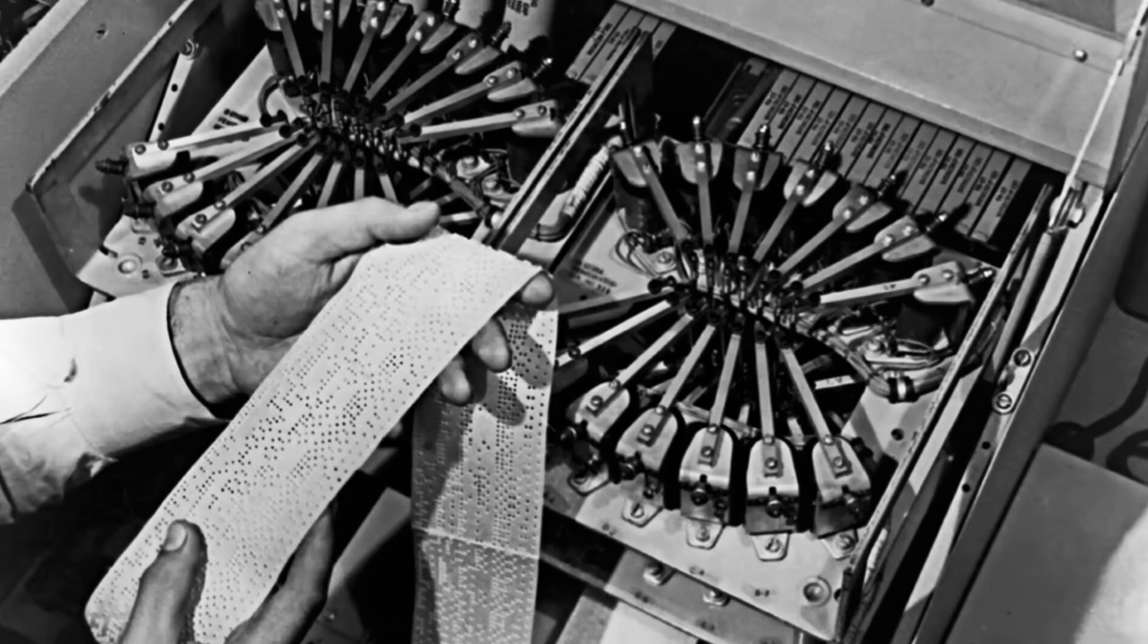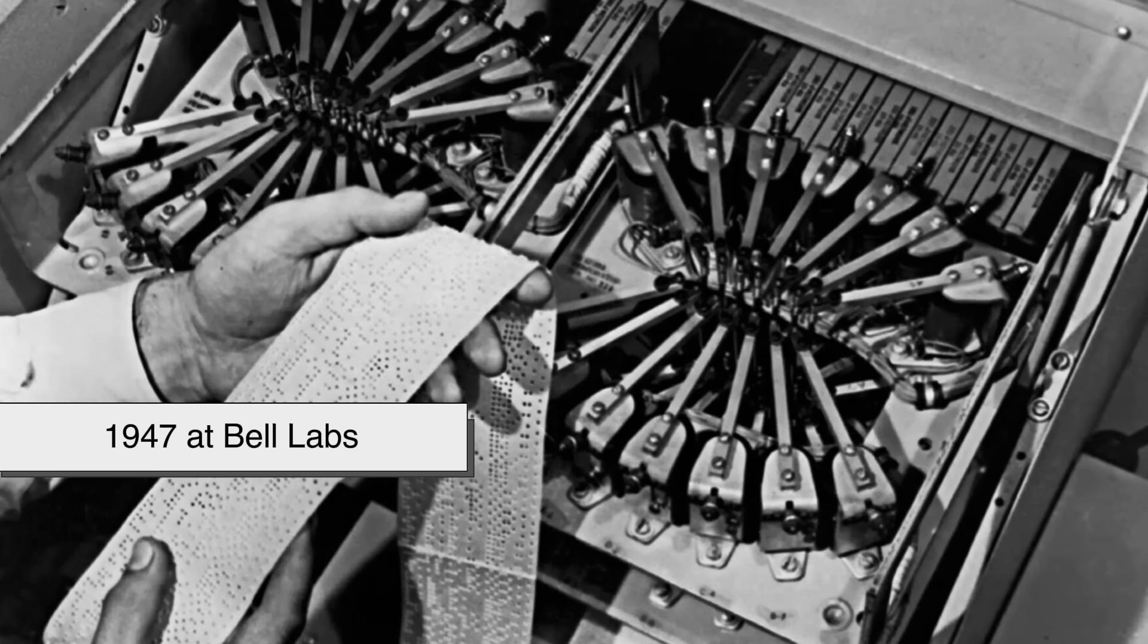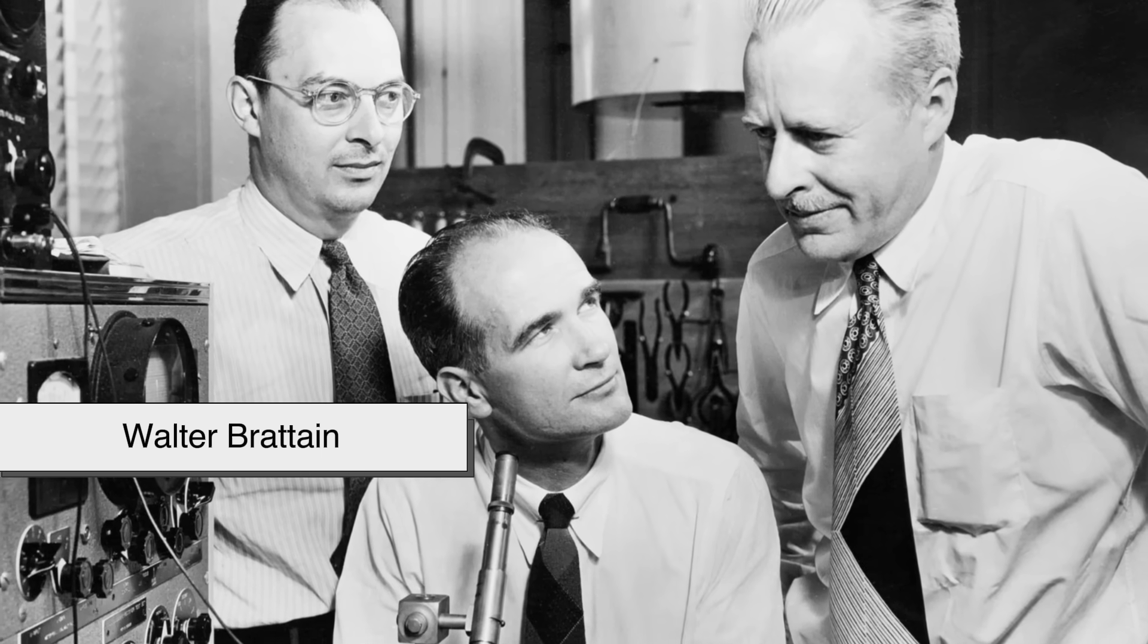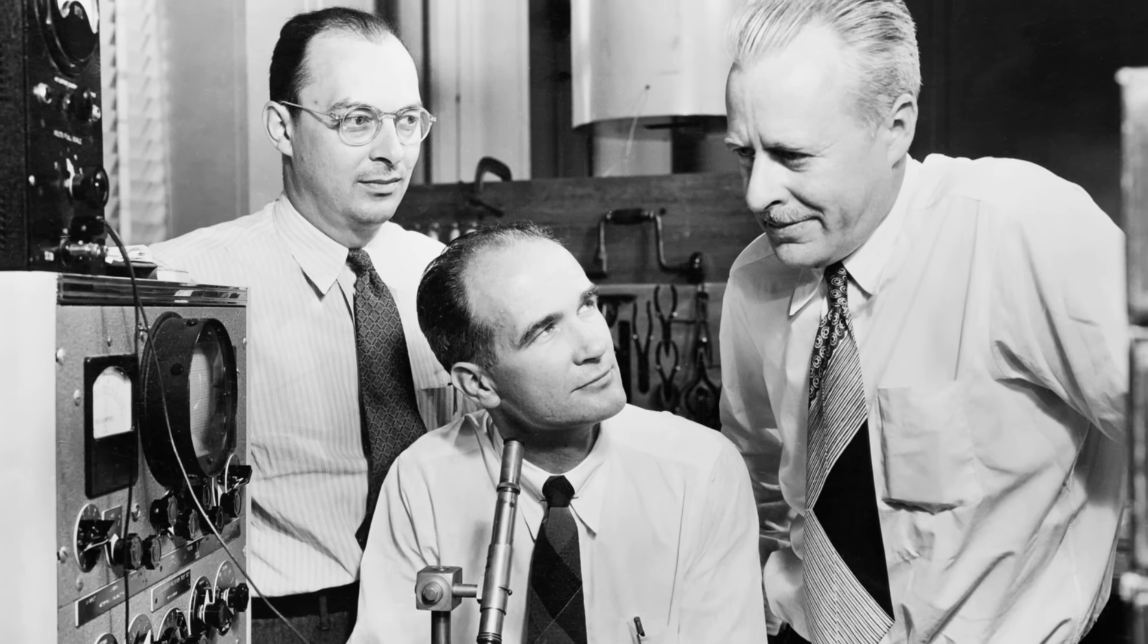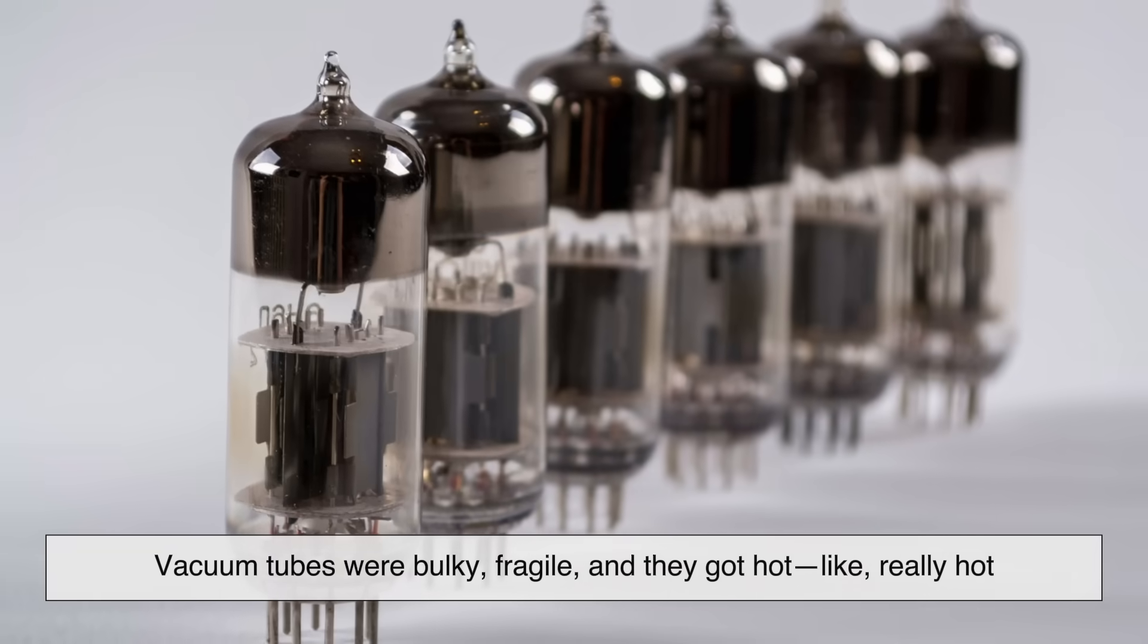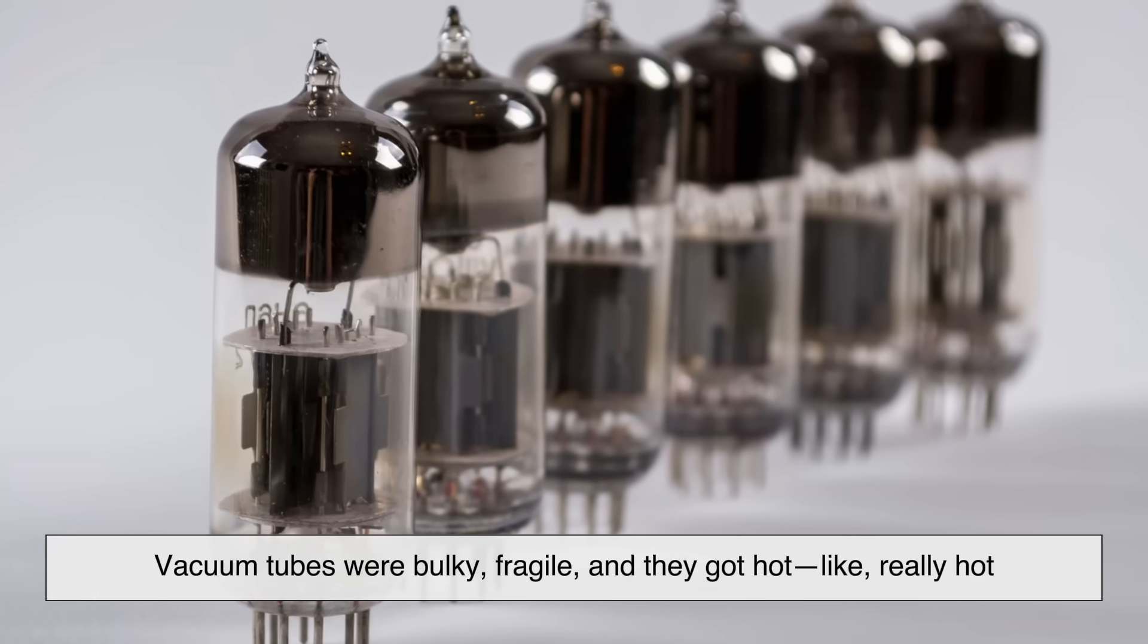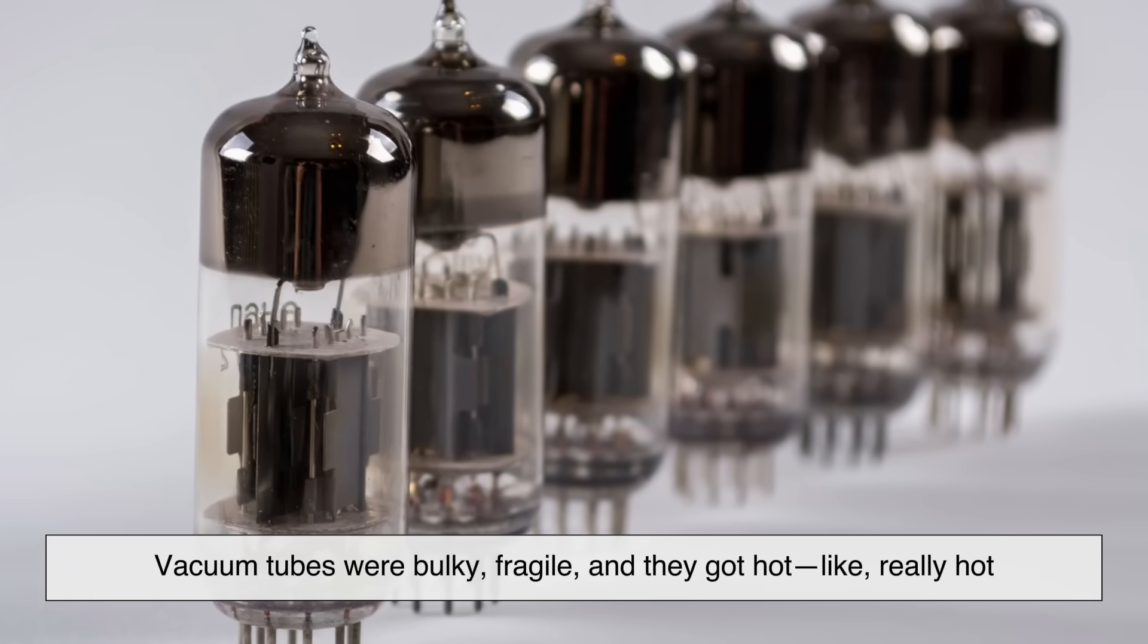The story of the transistor begins in 1947 at Bell Labs. Scientists John Bardeen, Walter Brattain, and William Shockley were trying to find a better alternative to the vacuum tubes that powered early electronics. Vacuum tubes were bulky, fragile, and they got hot. Like, really hot.